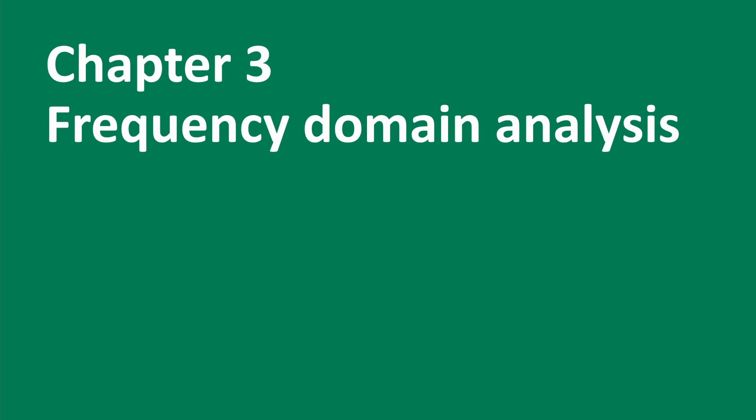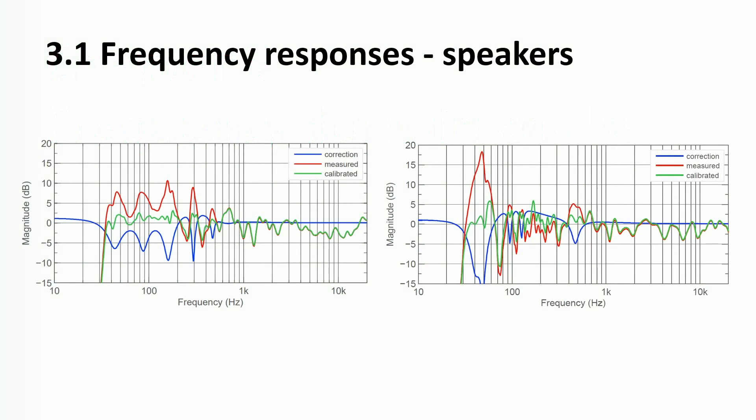Chapter 3: Frequency domain analysis. These graphs should look familiar to you because this is something we have shown in GLM for years. It shows the red curve, which is the situation in your room that has been measured, the blue curve which are the filter settings used to compensate for the room influences, and the green curve which is the resulting frequency response at your listening position. In these two examples, you can see on the left side I would be really happy with the bass range because there are no notches.